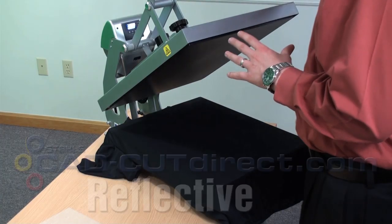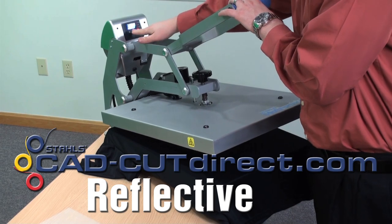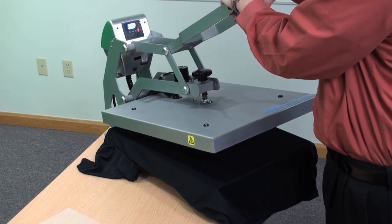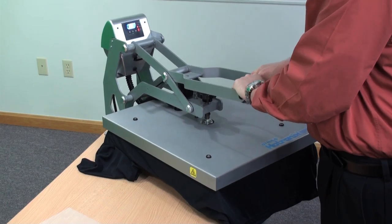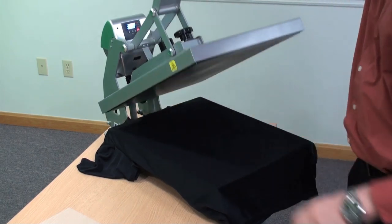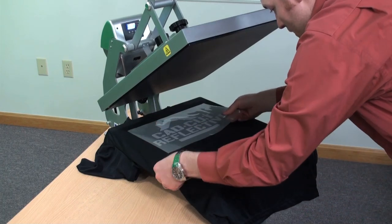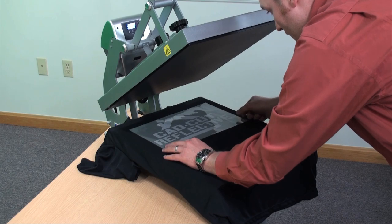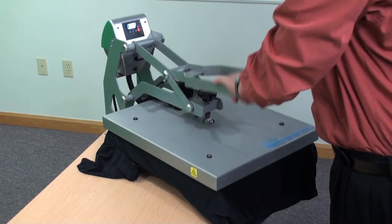CAD-CUT Reflective 2-step application, all at 330 degrees, medium pressure or 5 on the Hotronix Clam. Preheat your garment first to remove the moisture and wrinkles. Position your design. First application, 2 seconds.